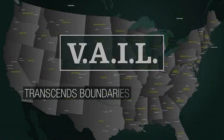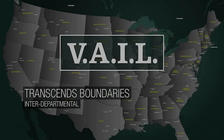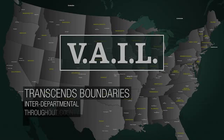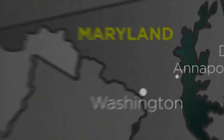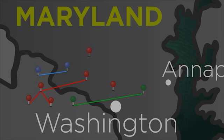Veil transcends boundaries — department, agency, county, and state. Veil can discover patterns independent of system boundaries, regardless of their location or technical platform, making the most of information-sharing initiatives.